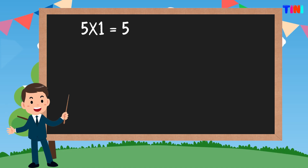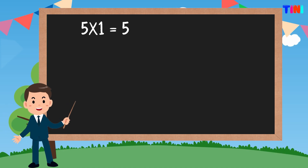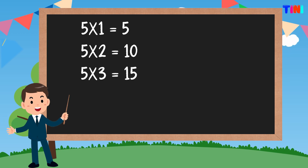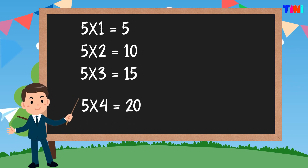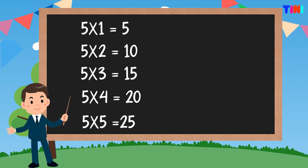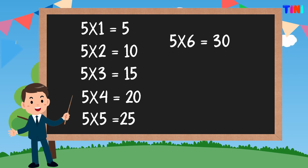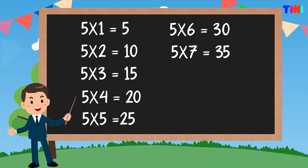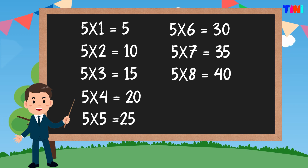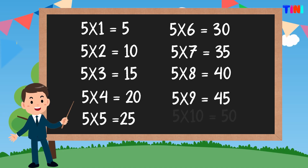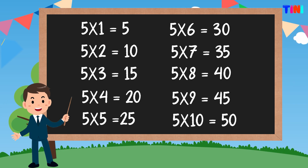5 ones are 5. 5 twos are 10. 5 threes are 15. 5 fours are 20. 5 fives are 25. 5 sixes are 30. 5 sevens are 35. 5 eights are 40. 5 nines are 45. 5 tens are 50.